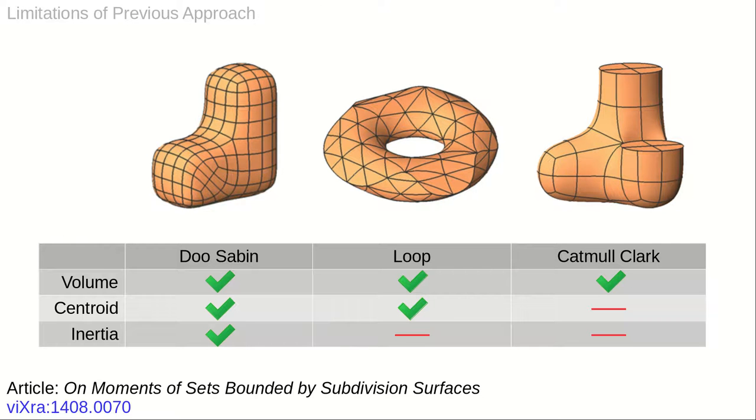The limitations of the previous matrix-centered approach are summarized here. For loop surfaces, the inertia forms were intractable, and for Catmull-Clarke both the centroid and inertia forms were out of reach.